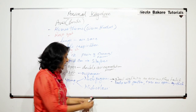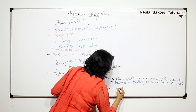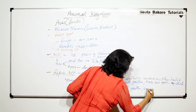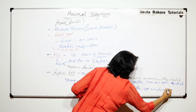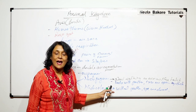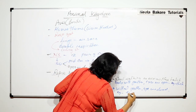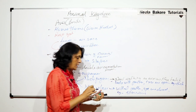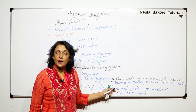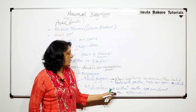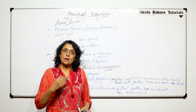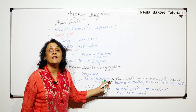In contrast, nidicolous young ones are without feathers, their eyes are closed, and they are completely dependent on their parents — they can neither see, nor fly, nor walk. The example here is the sparrow. When the eggs of a sparrow hatch, the young ones are absolutely naked with no feathers, their eyelids are fused and closed, so they cannot see and are totally dependent on the parents.